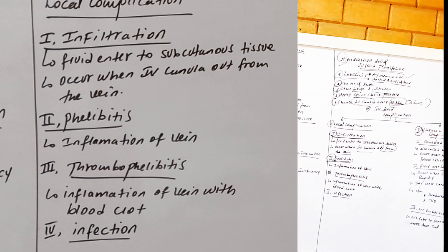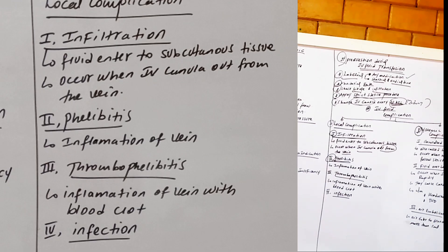The second local complication is phlebitis — inflammation of the vein. This can occur when strict sterile procedure is not followed, or when certain medications such as vancomycin cause an inflammatory reaction in the vein.